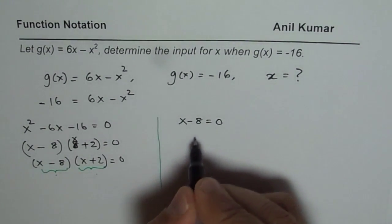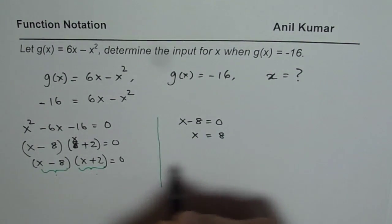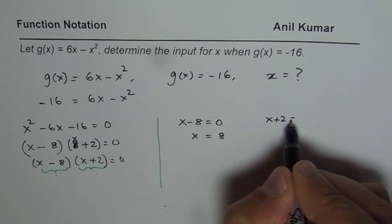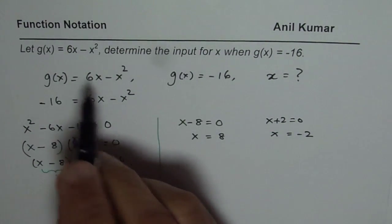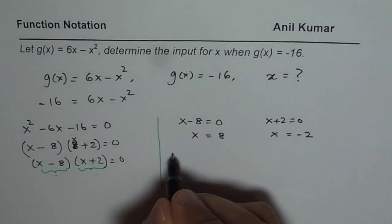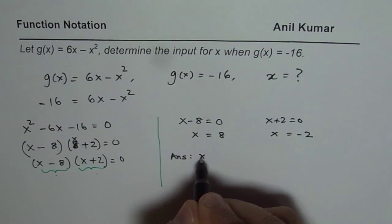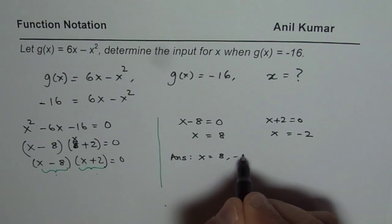x minus 8 equals to 0 means x equals to 8. And x plus 2 equals to 0 means x equals to minus 2. So we have two solutions for this function. Answer is x equals to 8 or minus 2.